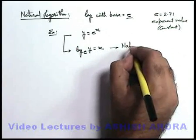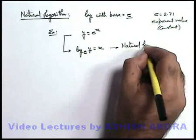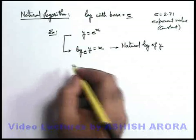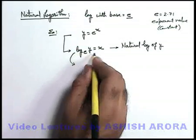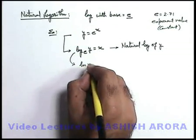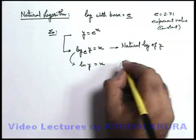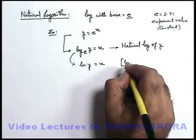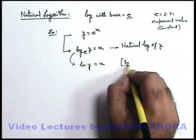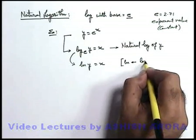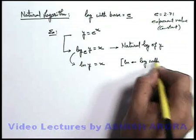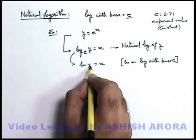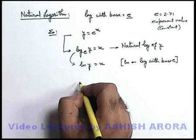It is written as natural log of y. And just to differentiate it from the common logs, there is another way of writing, it is written as ln y is equal to x. And you can simply keep in mind, whenever you find some term like ln is written, that means it is log with base e. This is also called natural log of y, which is written here as x.